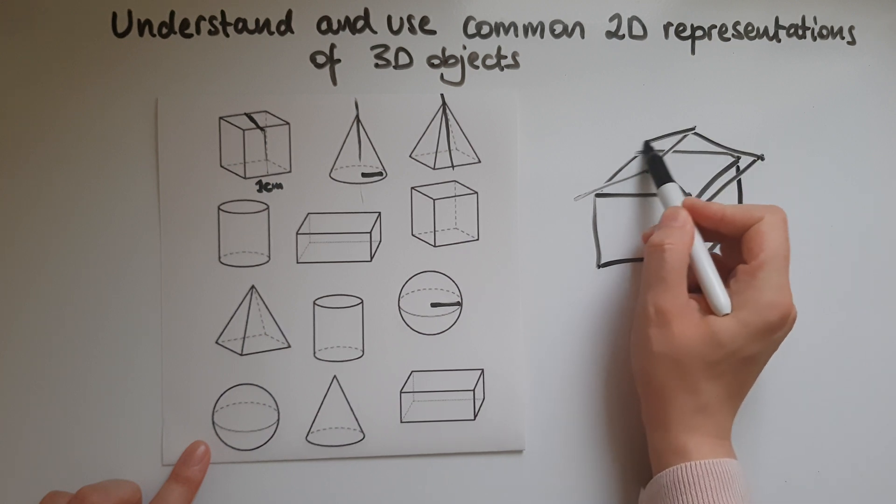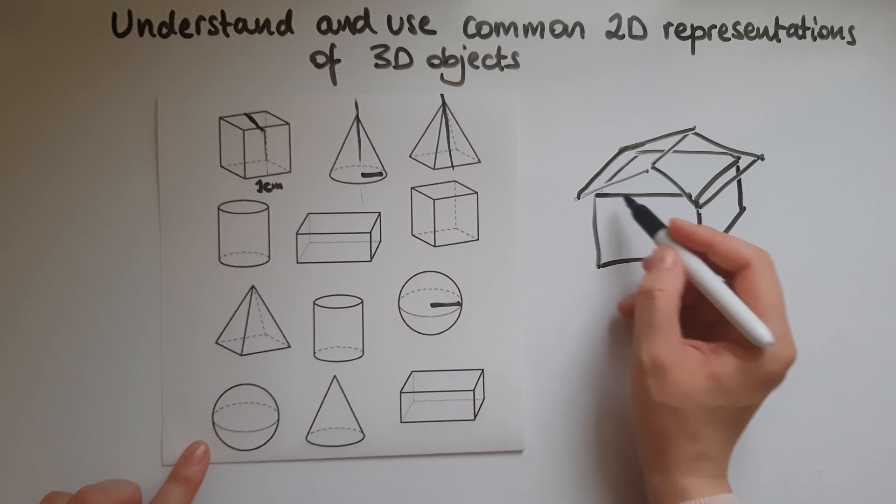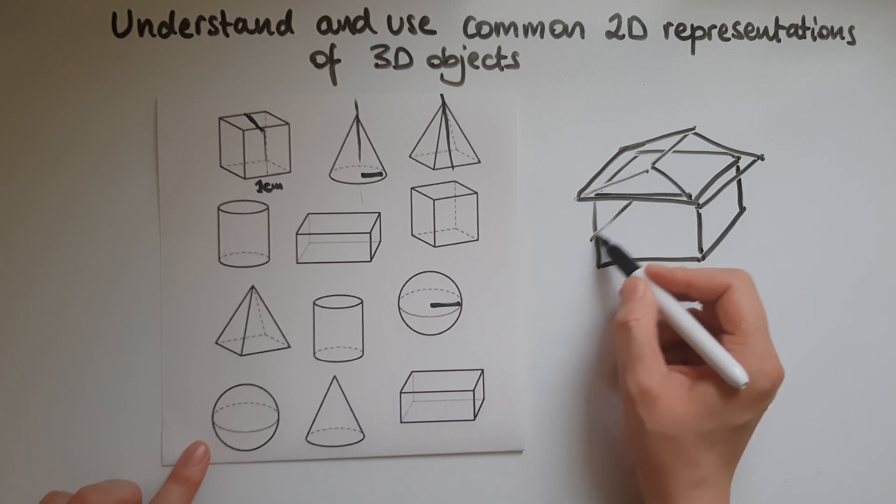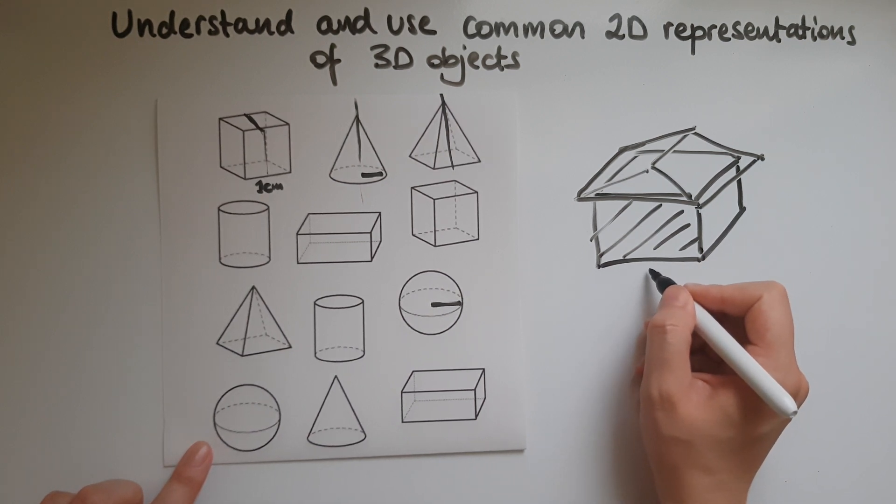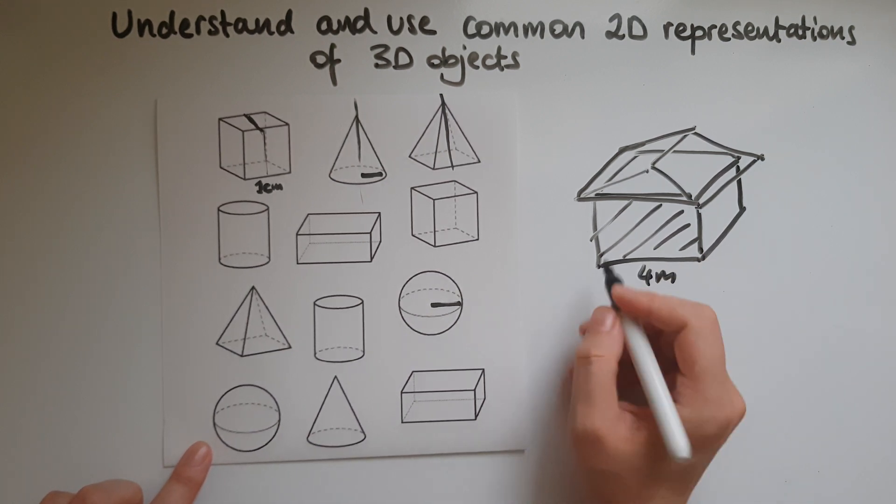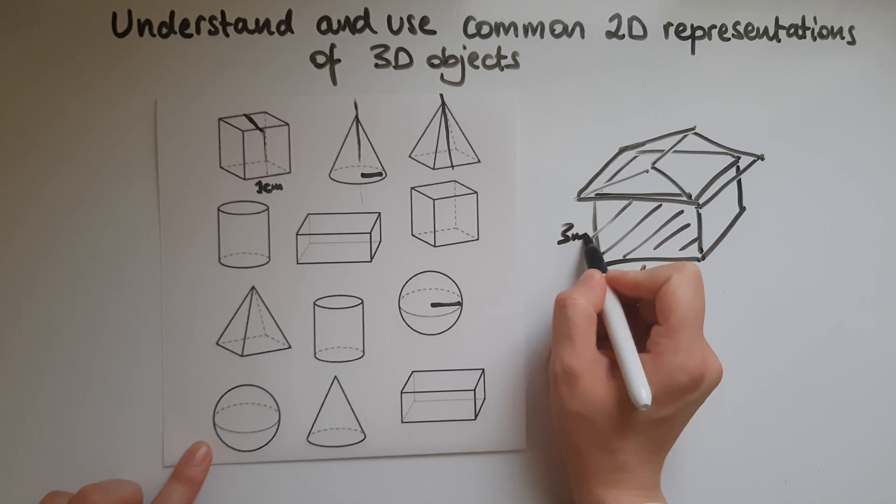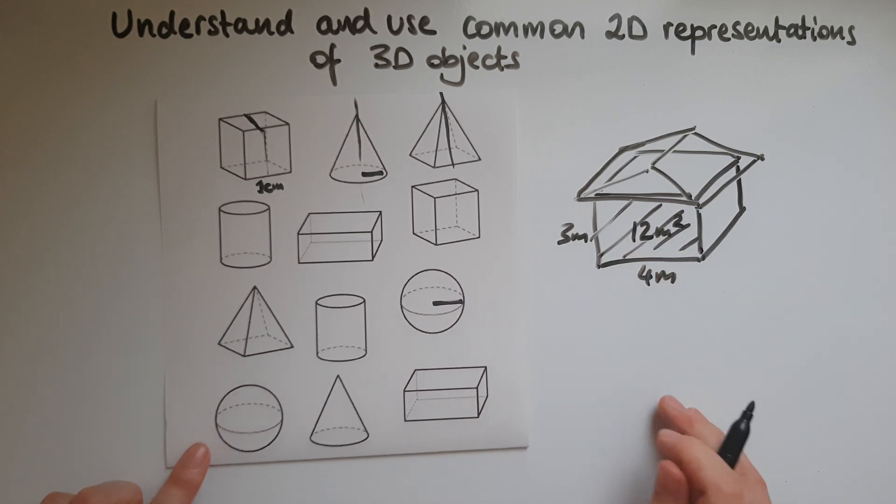We should be able to work out what is this area here. For example, if we're given the dimensions, let's say this is 4 meters, this is 3 meters. So there must be 12 meters squared.